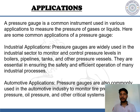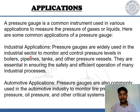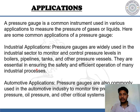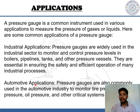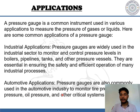Moving on to applications, a pressure gauge is a common instrument used in various applications to measure the pressure of gases or liquids. Industrial applications: pressure gauges are widely used in the industrial sector to monitor and control pressure levels in boilers, pipelines, tanks, and other pressure vessels, ensuring safety and efficient operation. Automotive applications: pressure gauges are also commonly used in the automotive industry to monitor tire pressure, fuel pressure, oil pressure, and other critical vehicle systems.